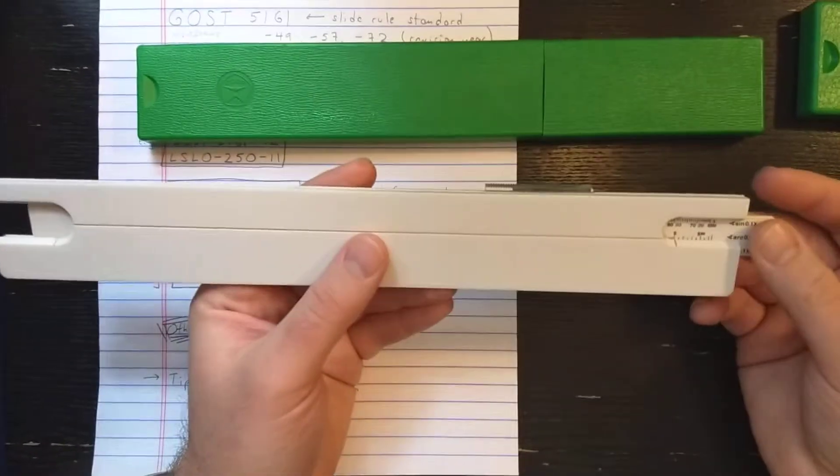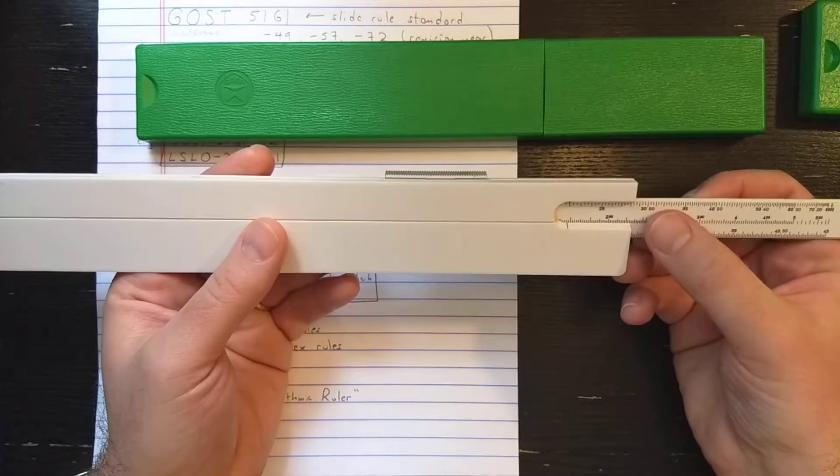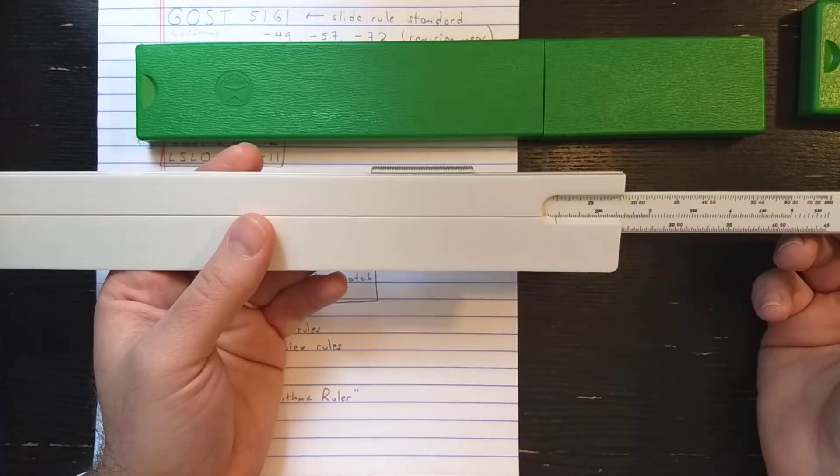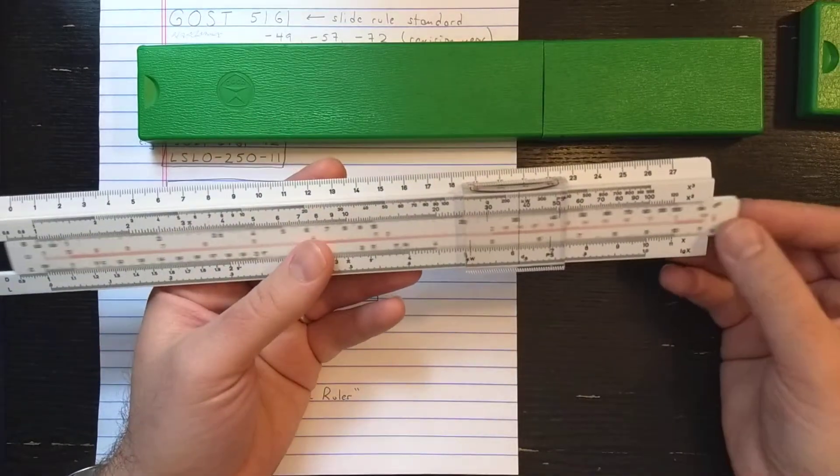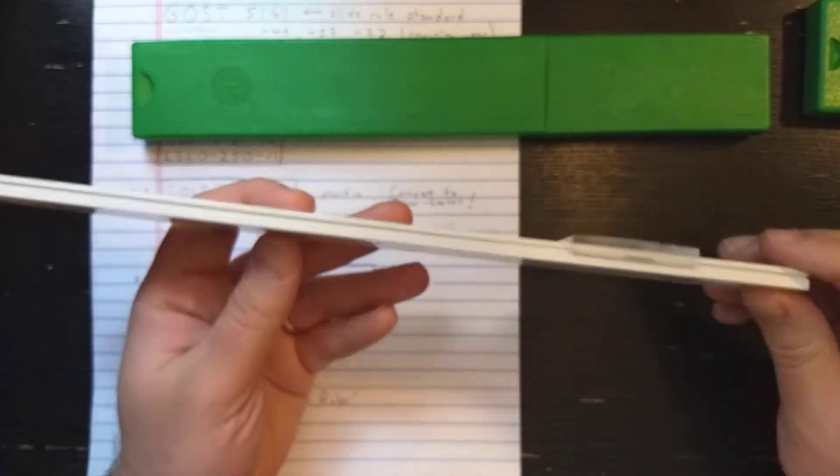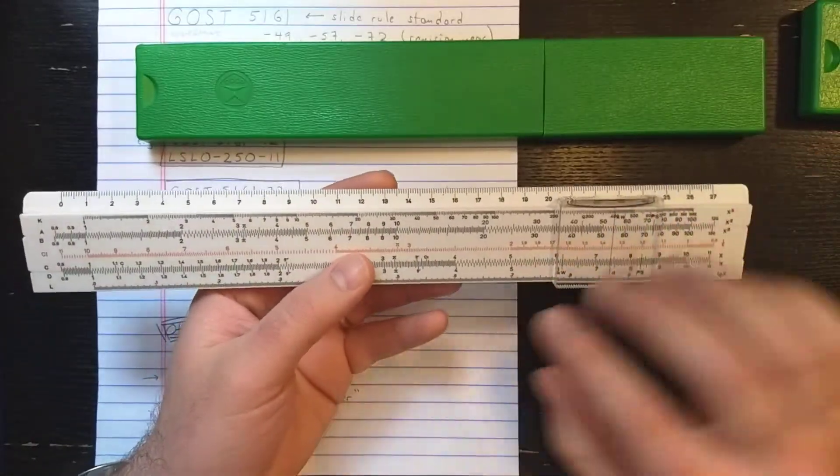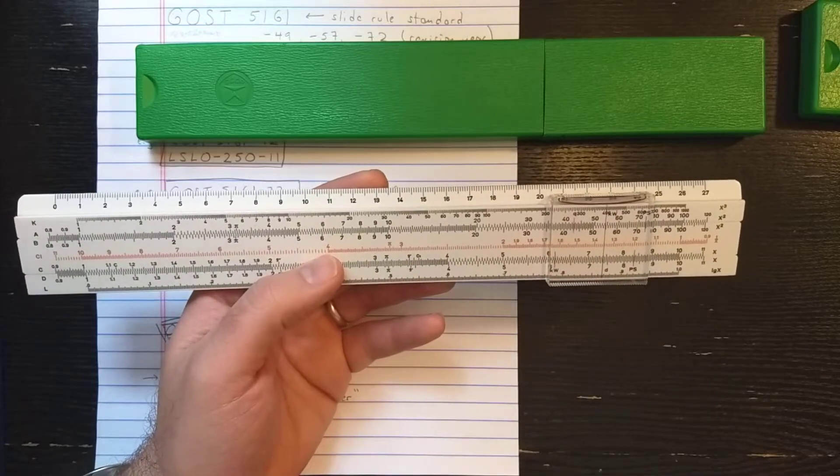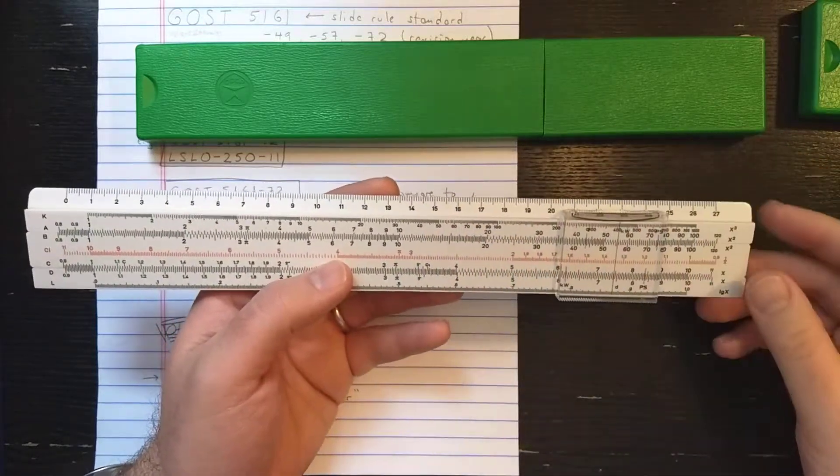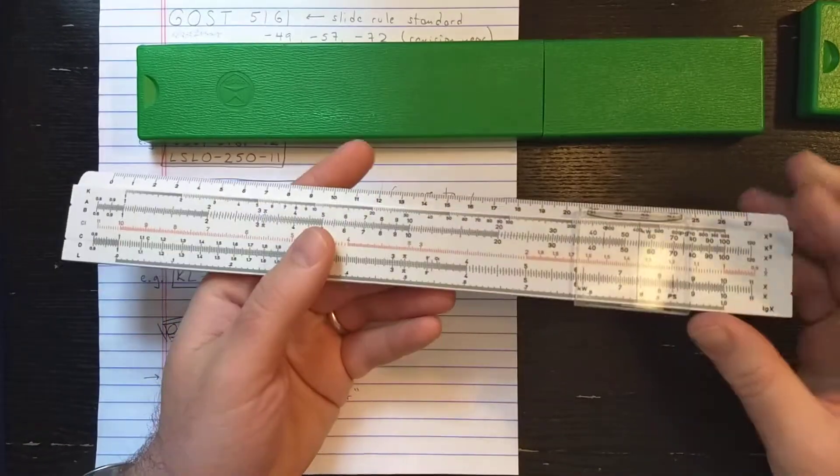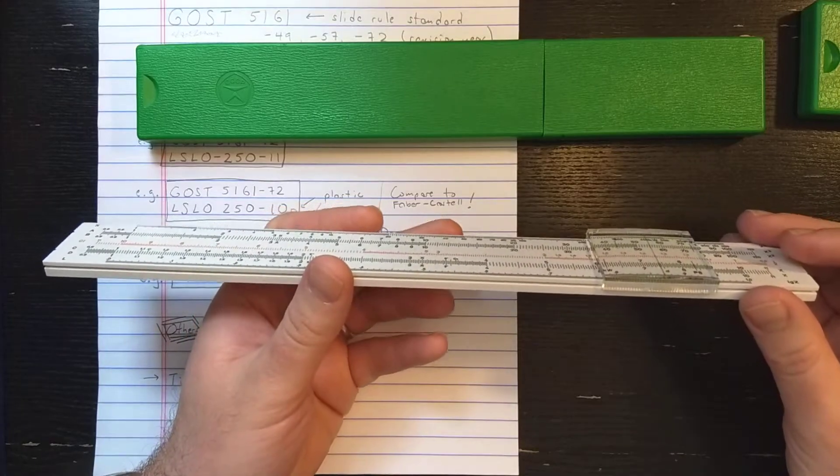But this is essentially identical to a late model Faber-Castell slide rule. And it has all the high-quality touches, like two-color printing here, which not a lot of slide rules have on the low end. It has a nice cursor. It has a nice feel. The plastic is nice. I've never seen any with the Faber-Castell problem of the bleeding scales, so they probably use a different plastic and/or ink compound.